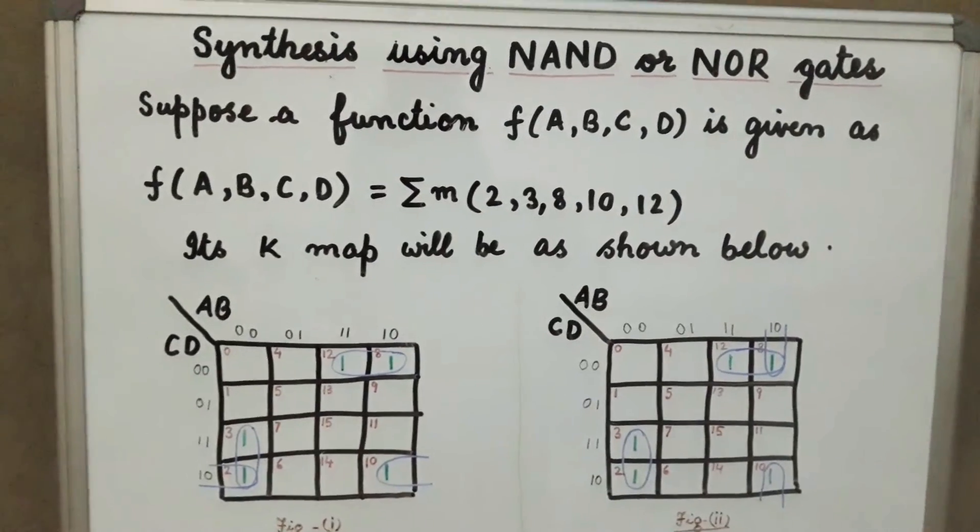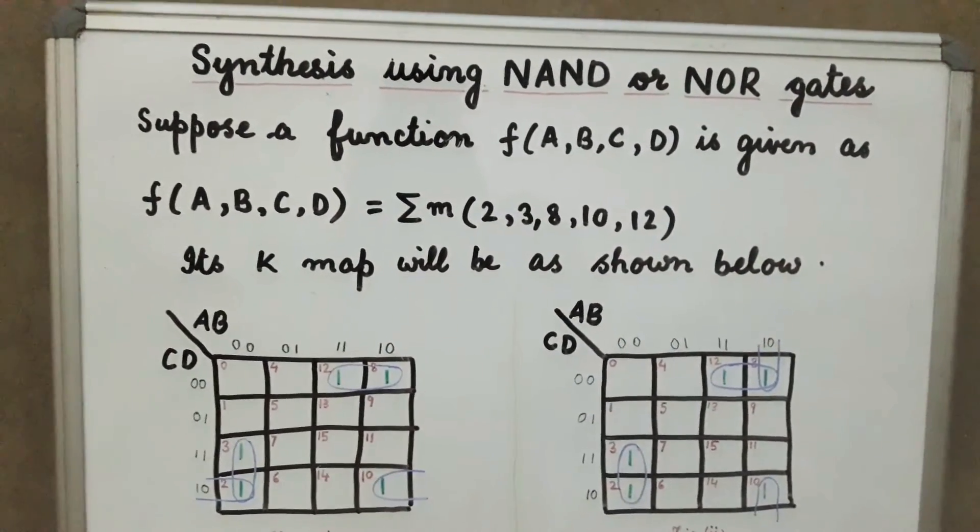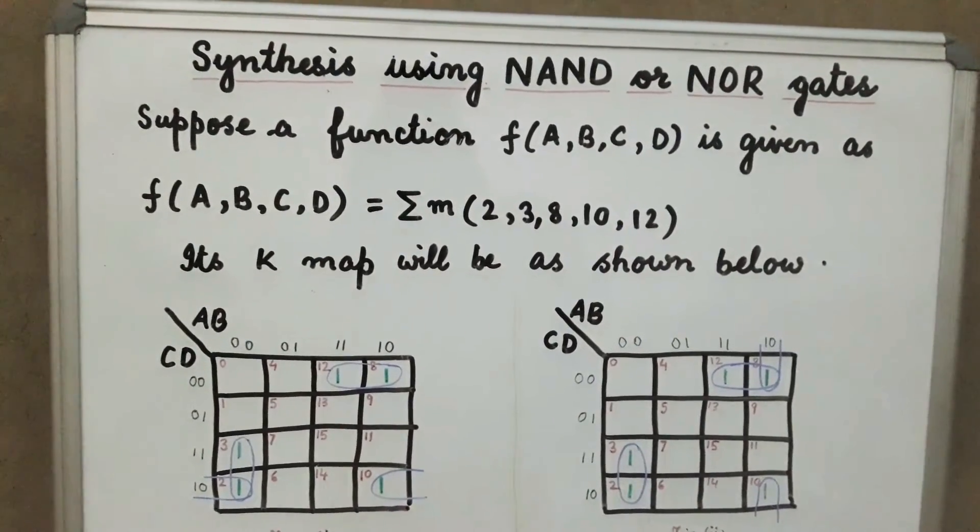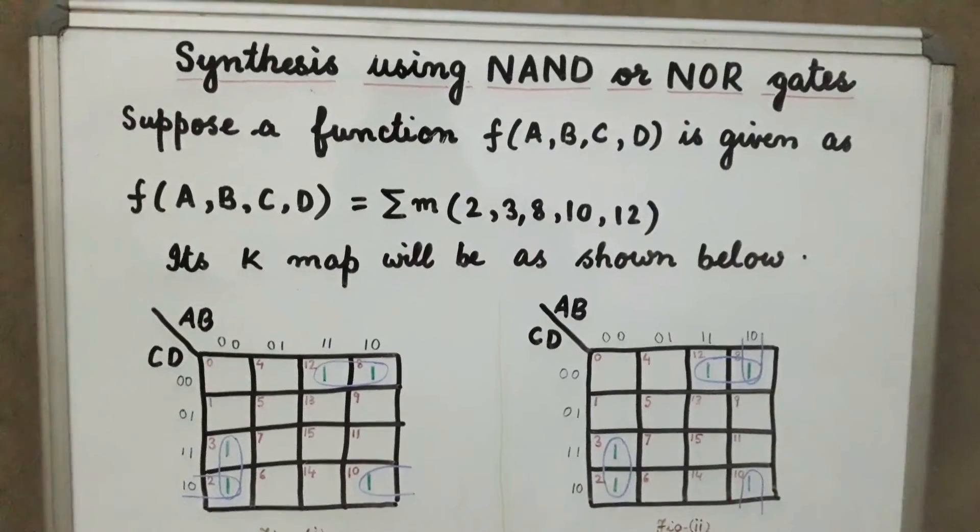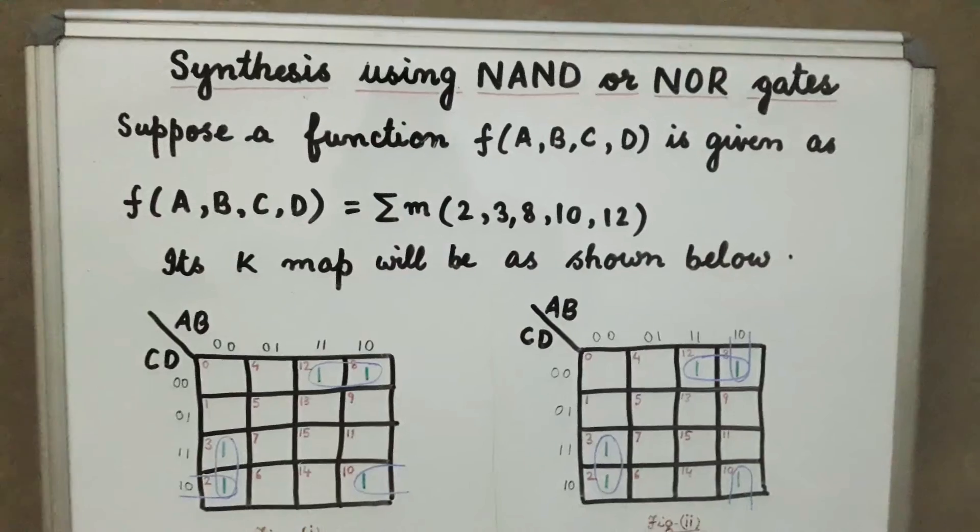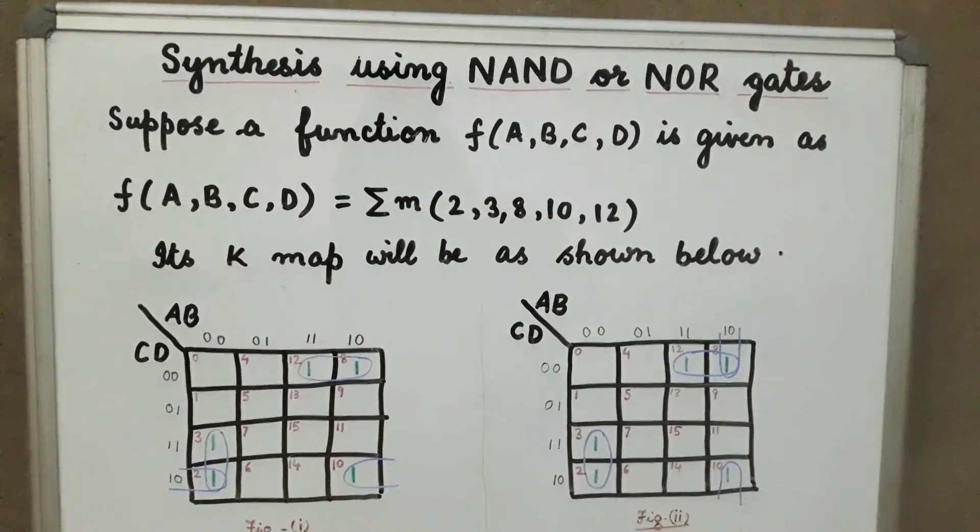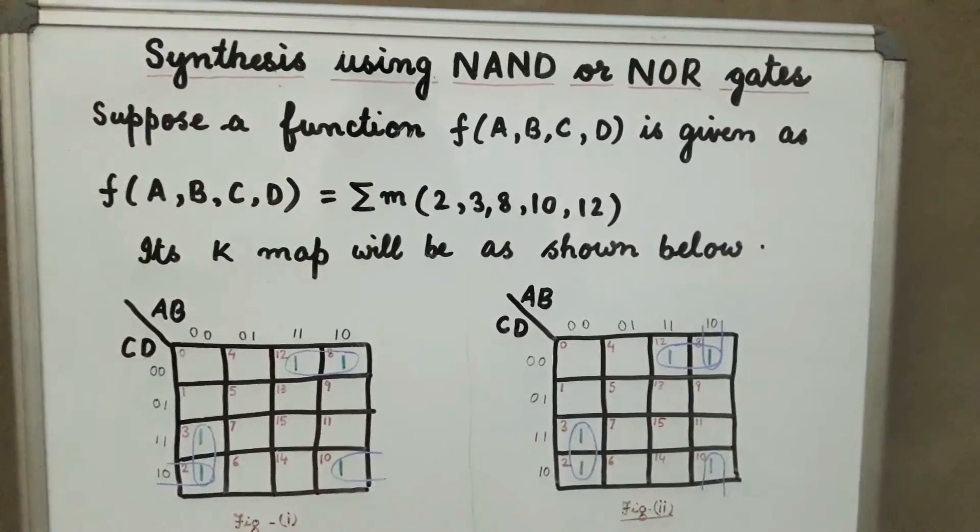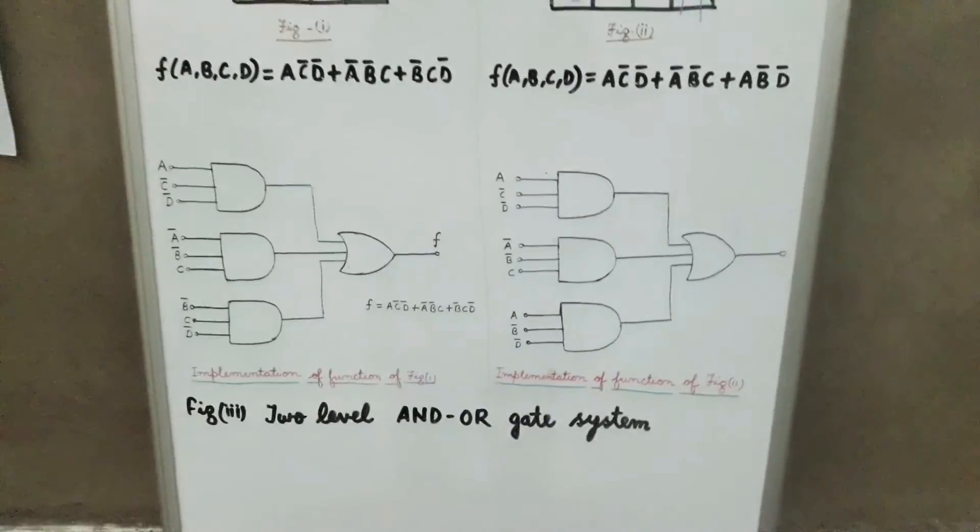Any input variable is transmitted first through an AND gate. Hence the AND gate is described as being at the first level, and after that it goes through the OR gate. So the OR gate is at the second level. The structure shown in figure 3 is therefore referred to as a two-level AND-OR gate system.